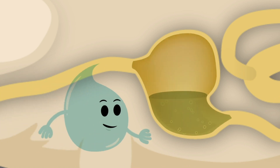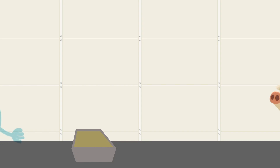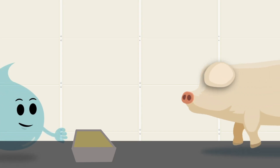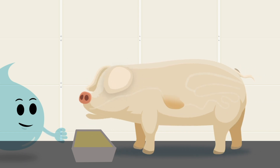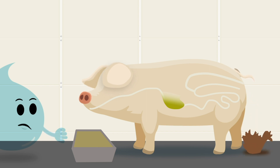Gastric secretions create an acidic environment in pigs' stomachs. This helps to eliminate pathogens and inhibits the multiplication of many bacteria such as E. coli and Salmonella. When pigs eat, the pH of the stomach rises and becomes less acidic. This happens more quickly in weaners and creates a favourable environment for bacteria.